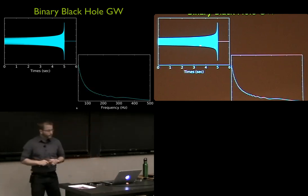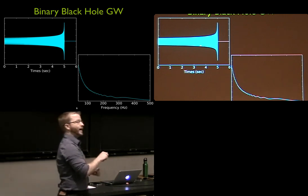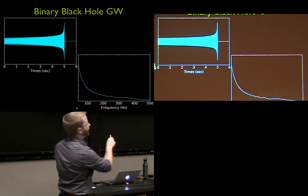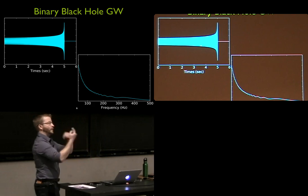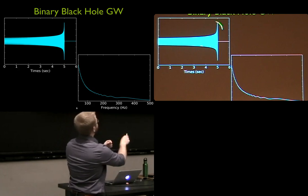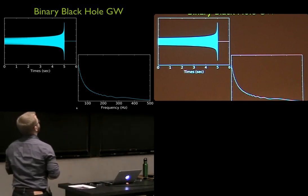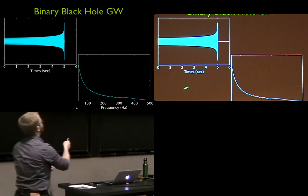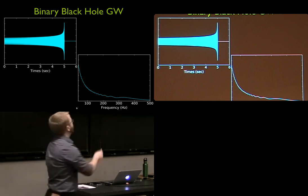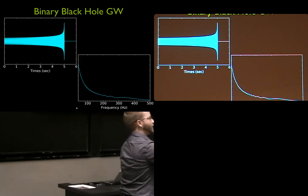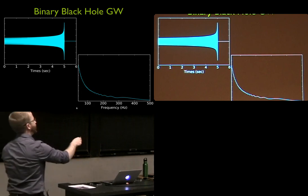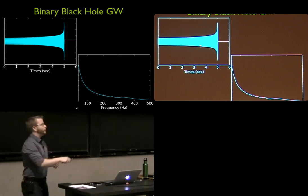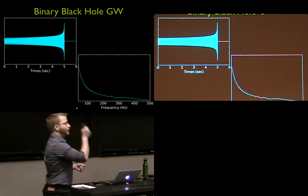We look at the spectrum, and particularly the low frequencies — notice this amplitude is really high, then as we go to higher frequencies, it goes down. We spend a long time at low frequencies but with low amplitude, then as the binary gets smaller and the two objects get closer together, the frequency and amplitude go up, causing that chirp, until they finally coalesce. This spectrum is equivalent to integrating over time, so you accumulate a lot of signal at low frequencies. You lose time resolution when you look at these spectra — to get that time resolution, we go to spectrograms.